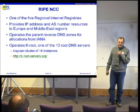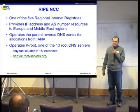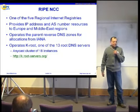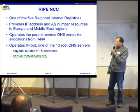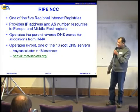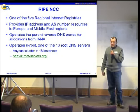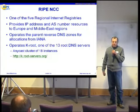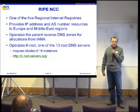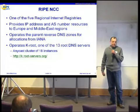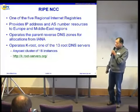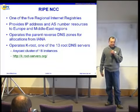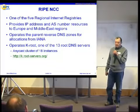A little bit about the RIPE NCC. I'm sure most of you know us, but in case you don't, we're one of the five regional internet registries, and we allocate IP address and AS number resources to our members. We also operate the reverse DNS zones for all this IP address space that we allocate. And more interestingly for this presentation, we operate one of the 13 root DNS servers called K-Root. We have an Anycast cluster of 18 instances, and more information is available on the K-Root homepage.